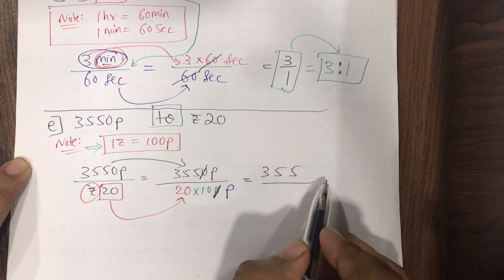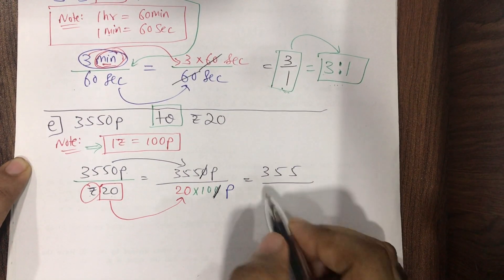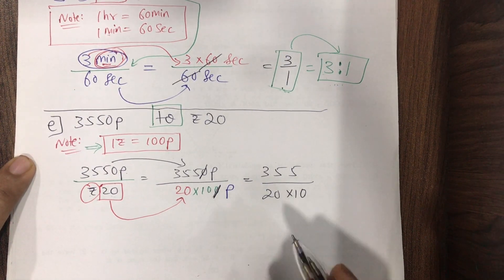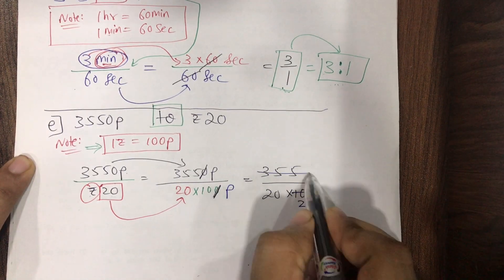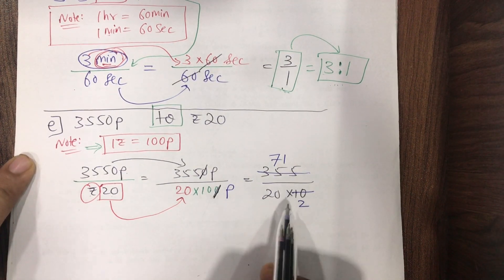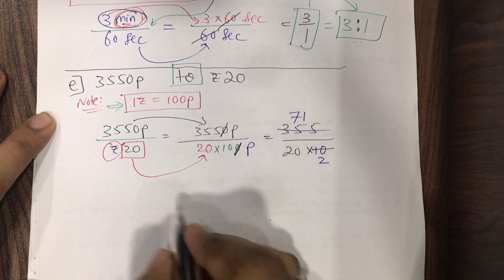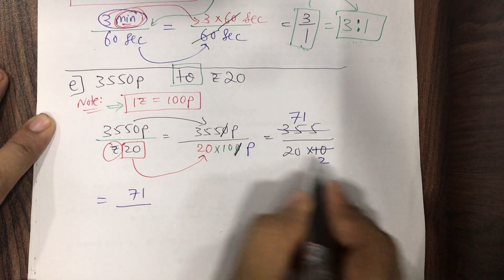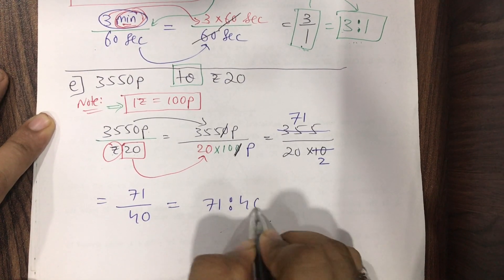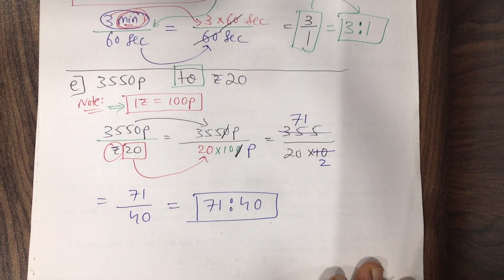Ratios will never have units — if you write units you will be wrong. Now doing the cancellation: dividing by 5, we get 71 upon 40. 14 is even... 71 upon 40. So we don't leave the answer in fraction form. The answer is 71:40. Hope you understood. Pause the video and do it first on your own.